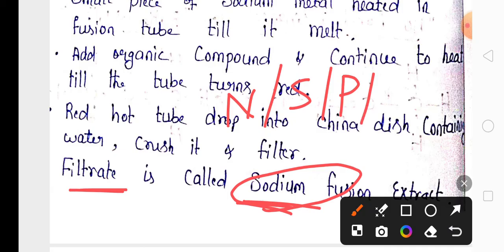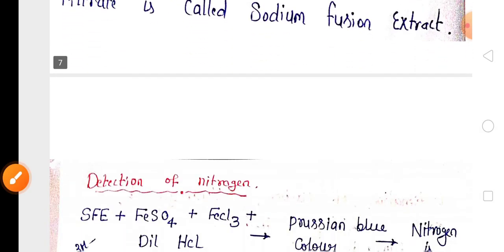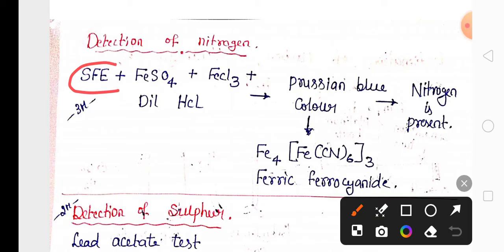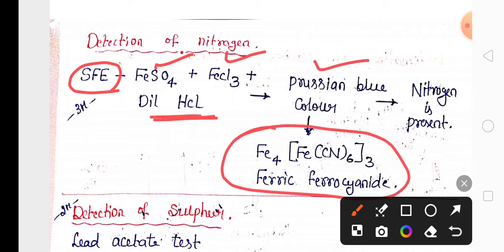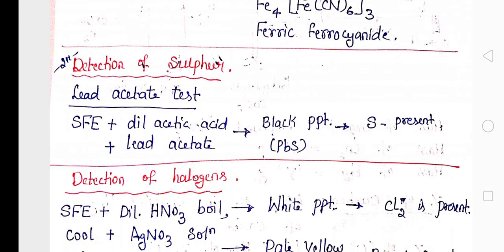For the detection of nitrogen, add ferrous sulfate and ferric chloride to the sodium fusion extract in the presence of dilute hydrochloric acid. A Prussian blue color is obtained, which indicates the presence of nitrogen in the compound.